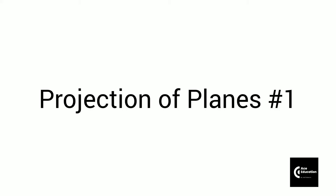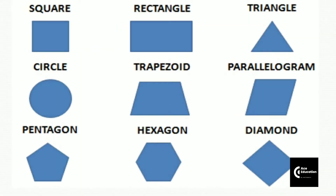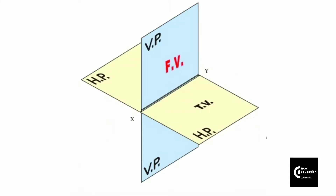Hello friends, welcome to AS Education. In today's video we are going to cover how we can project different types of planes. A plane is any entity or lamina that is a two-dimensional figure — it may be a circle, triangle, rectangle, or any polygon. When it is inclined with respect to different planes, either the horizontal plane or vertical plane, we will see its projections like front view and top view.